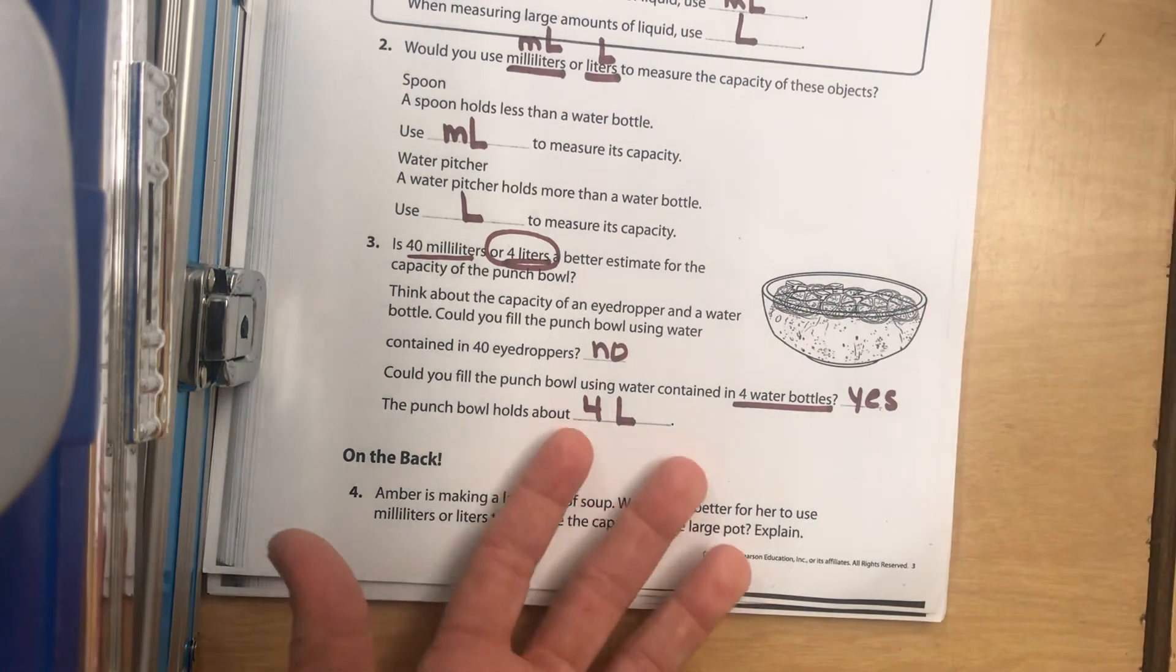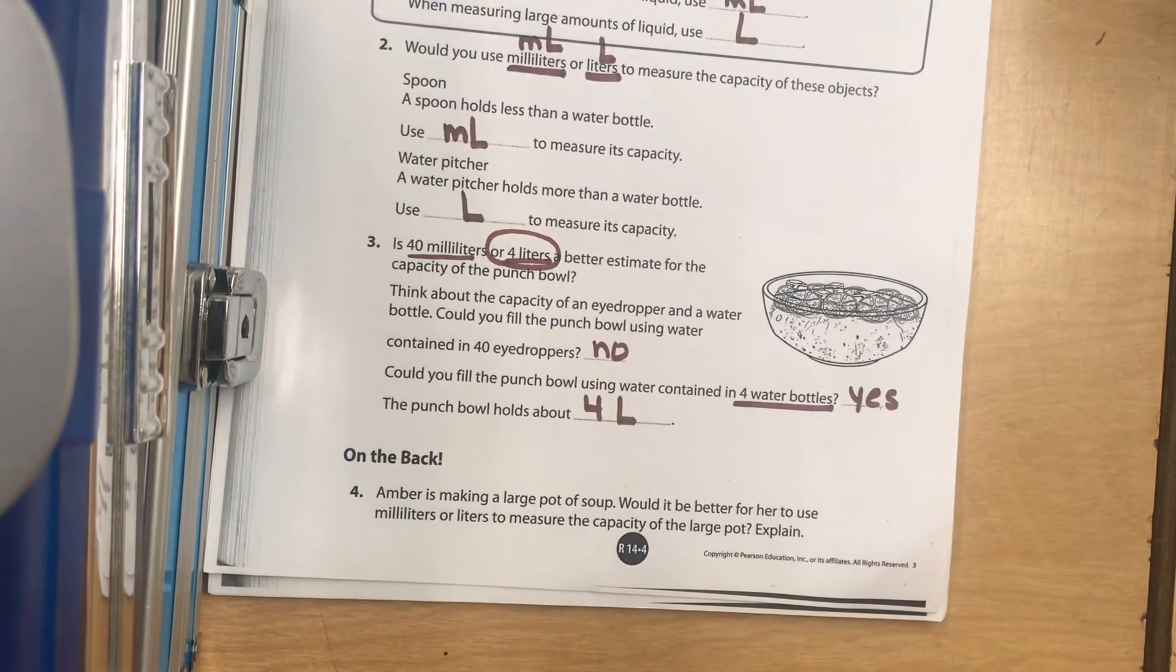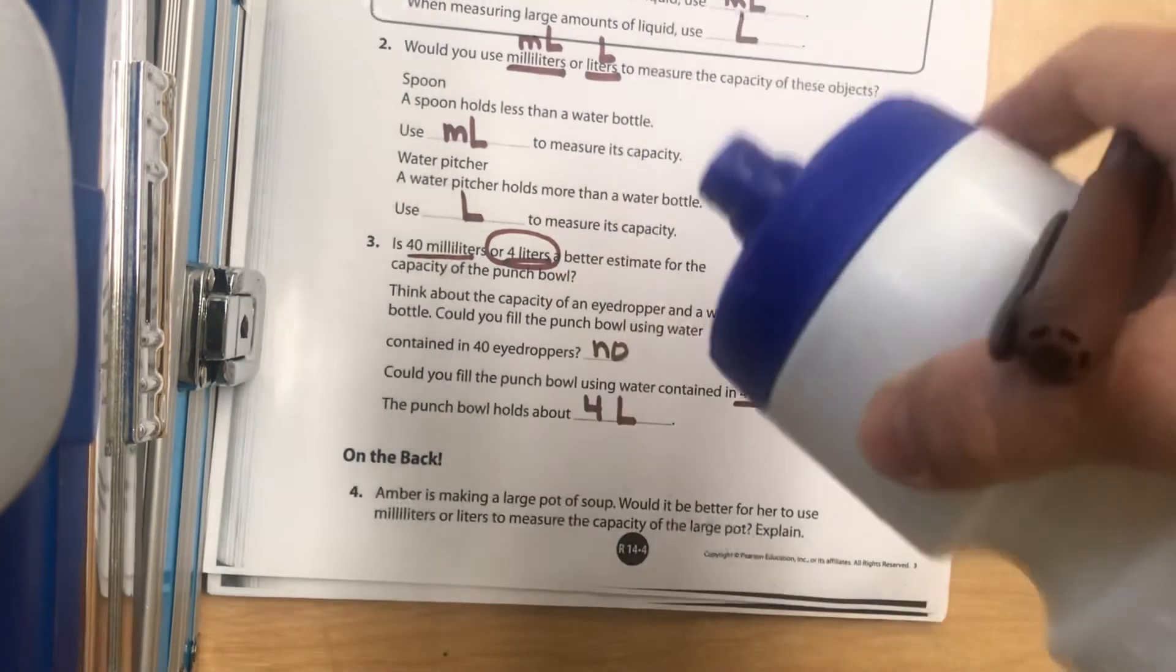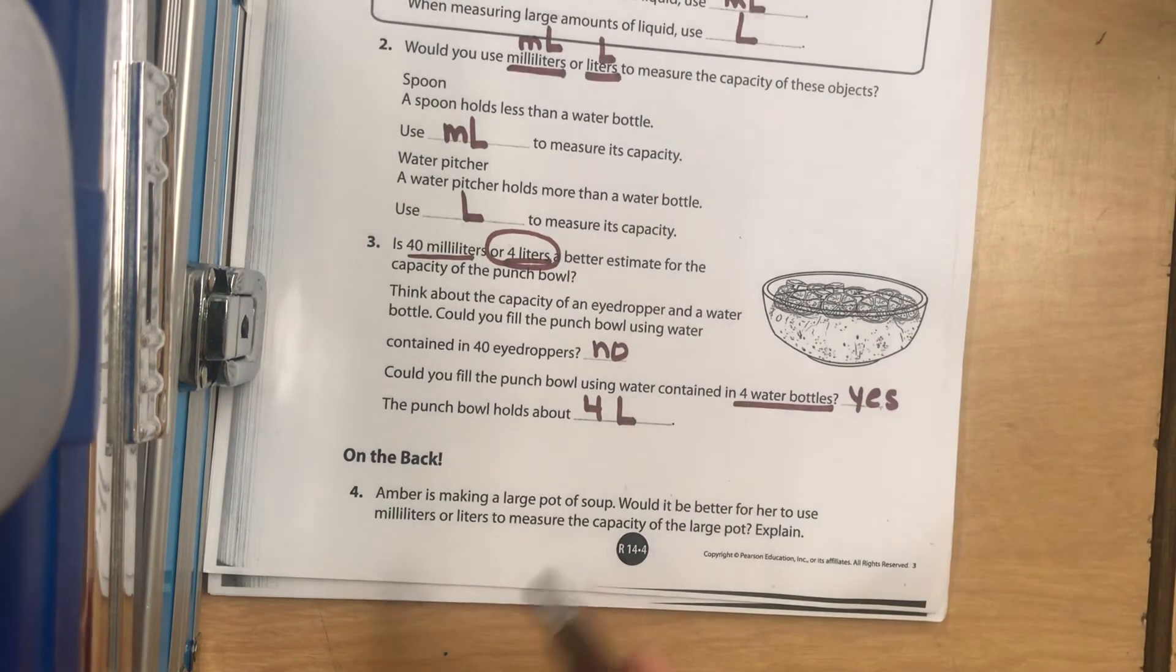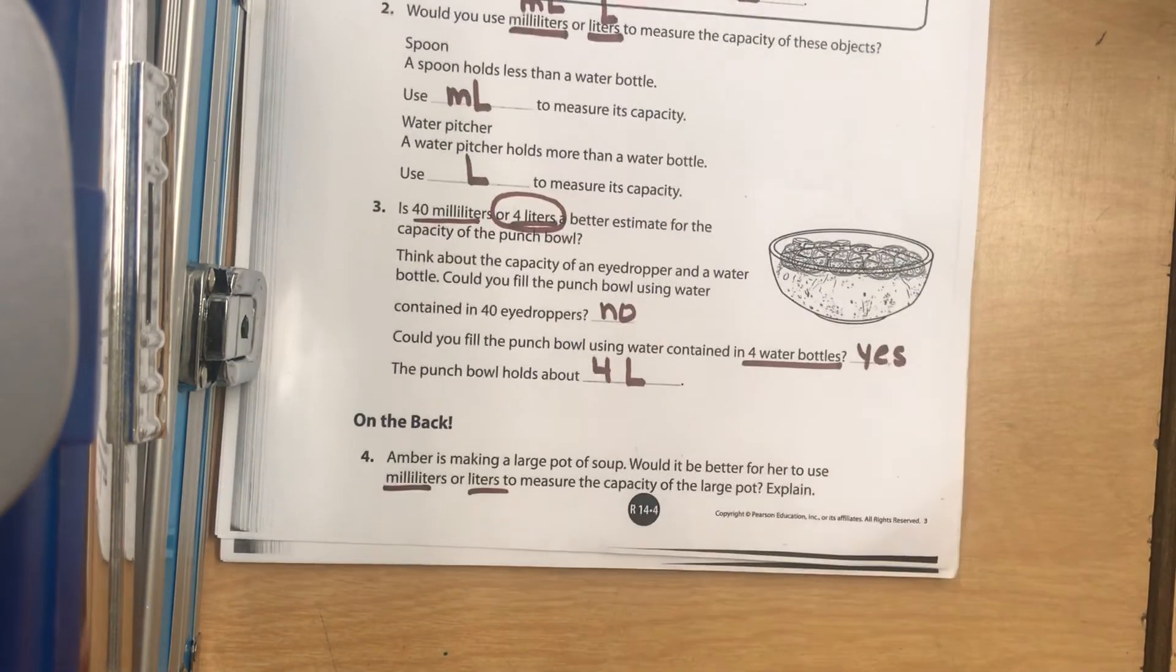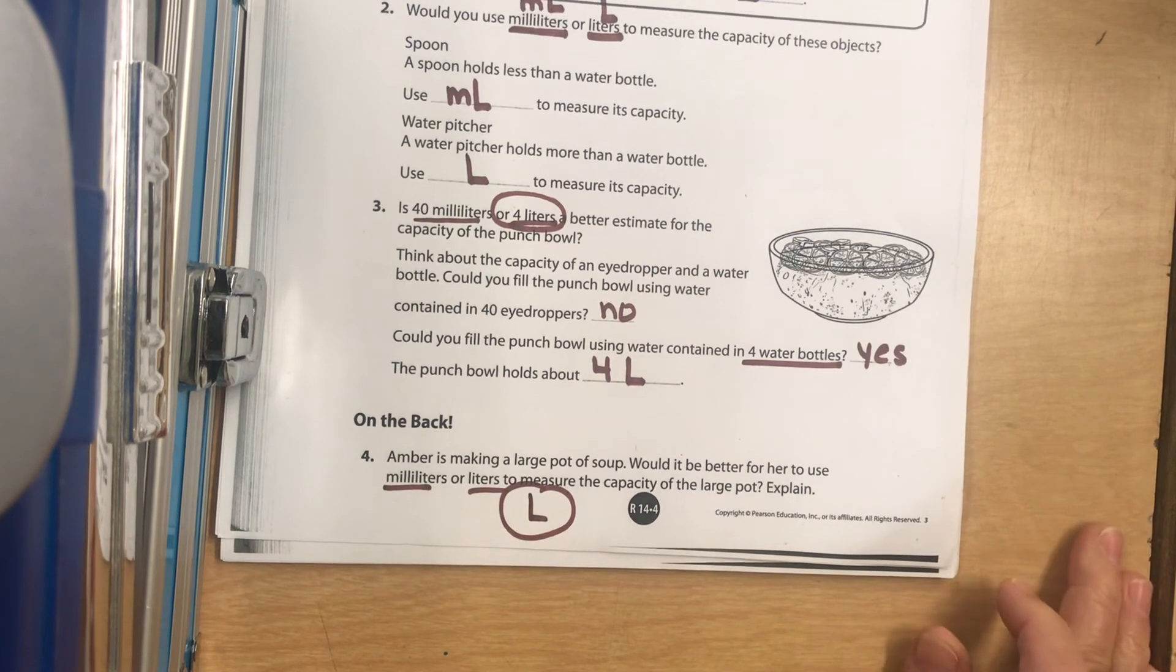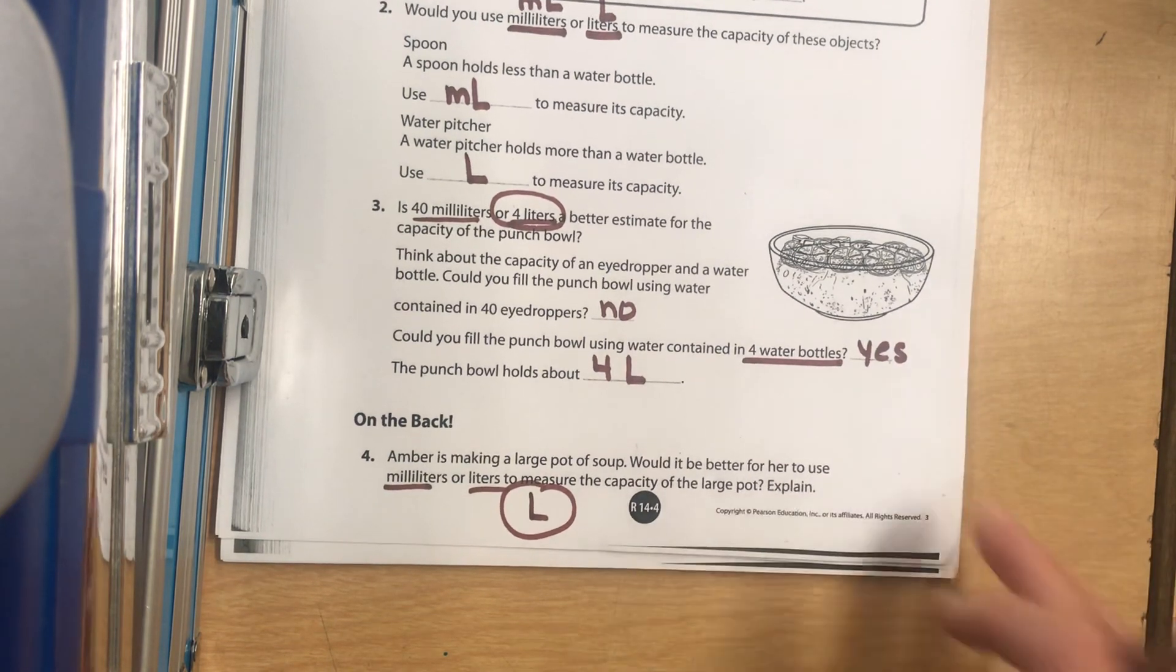Okay. A large pot of soup is going to be super, super big on the stove. Would you want to fill that with an eyedropper or would you want to take bottles and pour them in there? What do you think? Write down either milliliters or liters. I would definitely say liters. You don't want to stand over the stove for five hours filling it by an eyedropper. So good job.